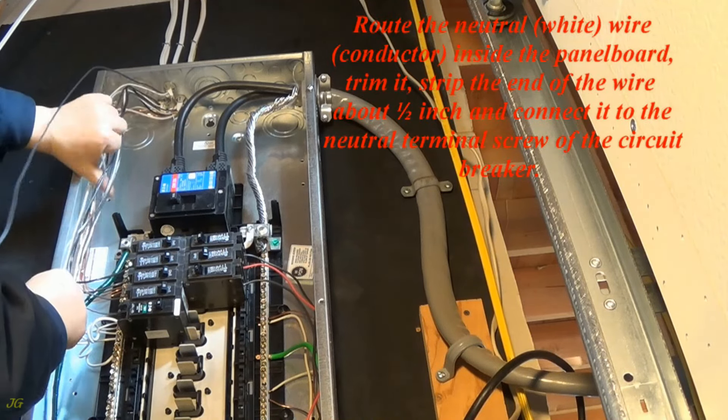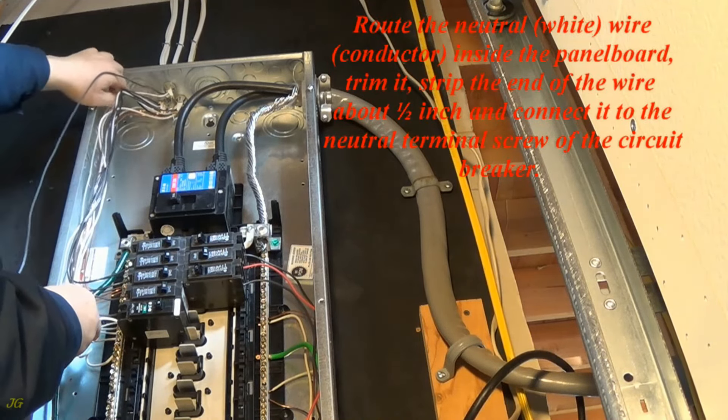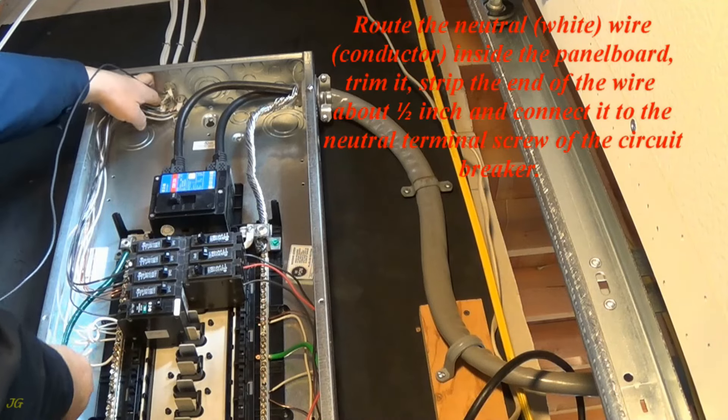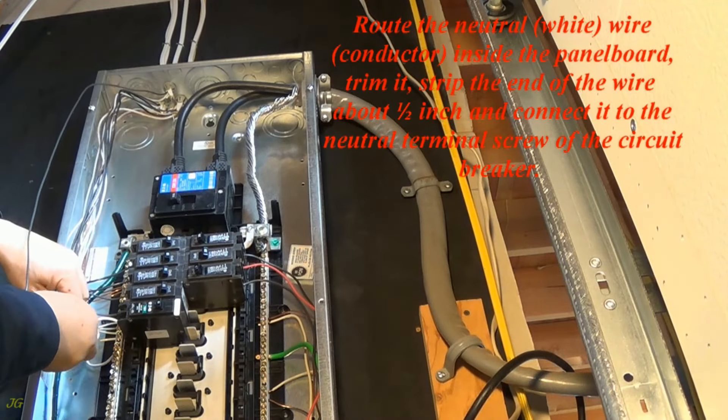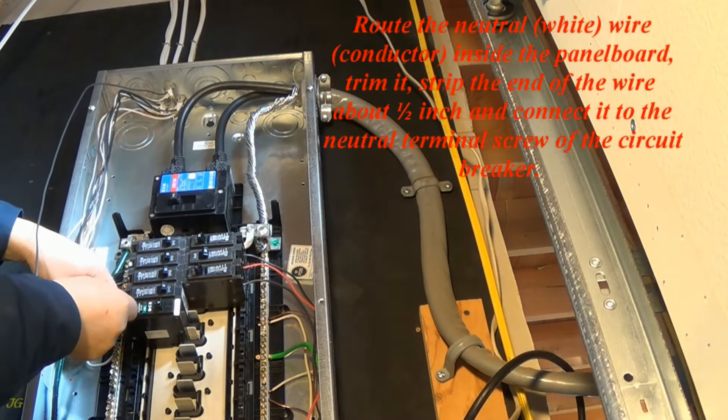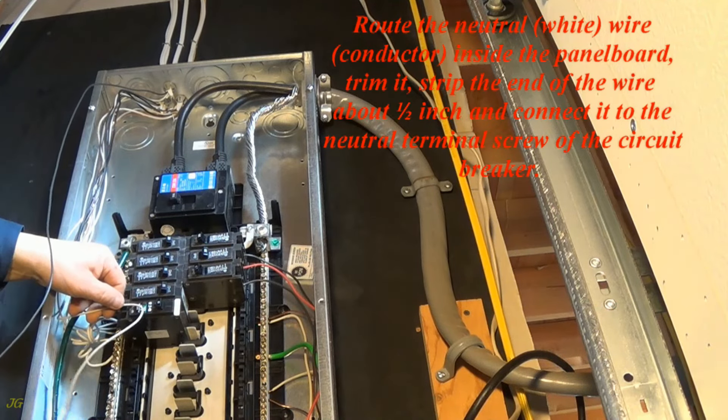Route the neutral, white, wire conductor inside the panel board, trim it, strip the end of the wire about one half inch and connect it to the neutral terminal screw of the circuit breaker.